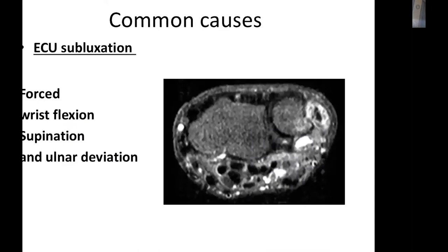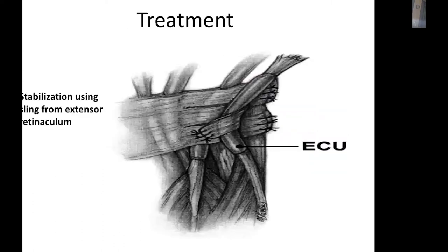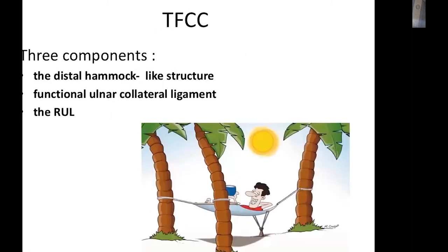Regarding common causes, ECU subluxation presents with an audible clunk and pain with forced flexion, supination, and ulnar deviation. Treatment is by surgical stabilization — mobilization of the ECU tendon through a dorsal approach.